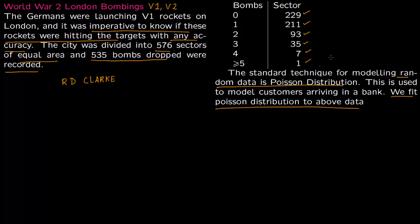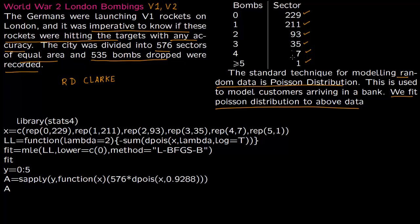For such a distribution you don't have to actually do the maximum likelihood estimation because you can just take the average, the mean of this, and that will give you the estimate of the factor lambda used in the Poisson distribution. But we are going to do the maximum likelihood estimation to show you that you can also use numerical techniques.